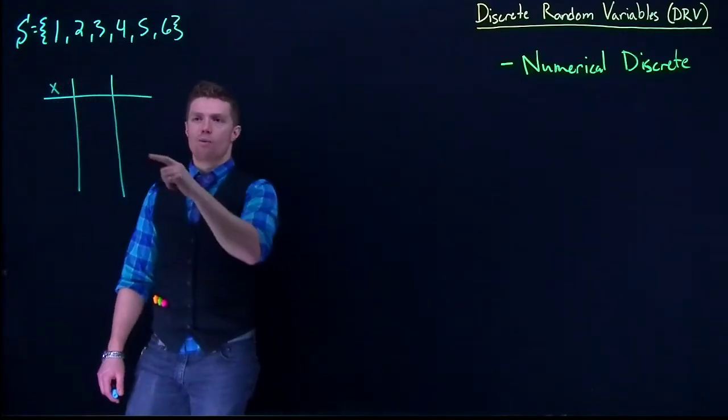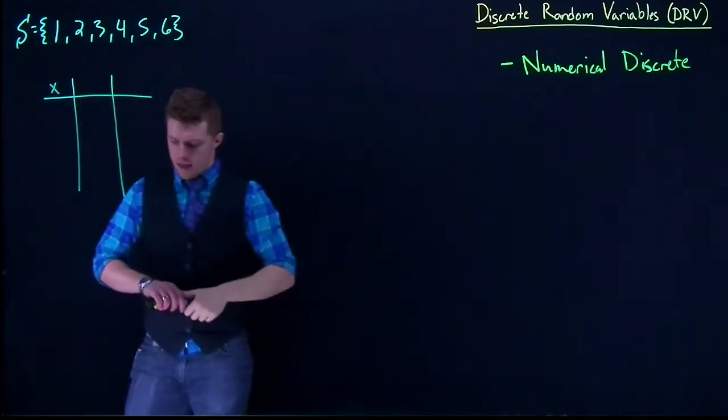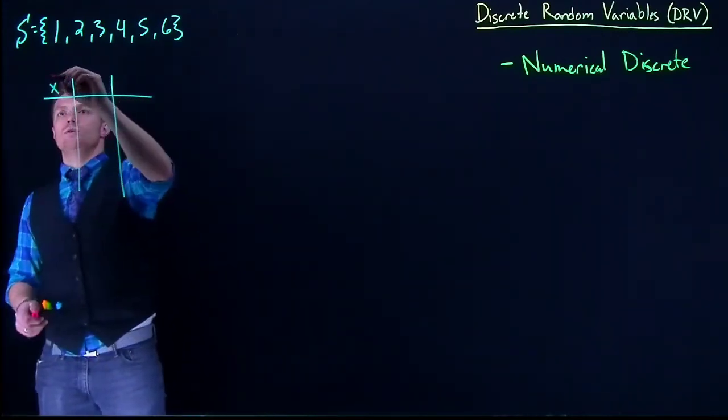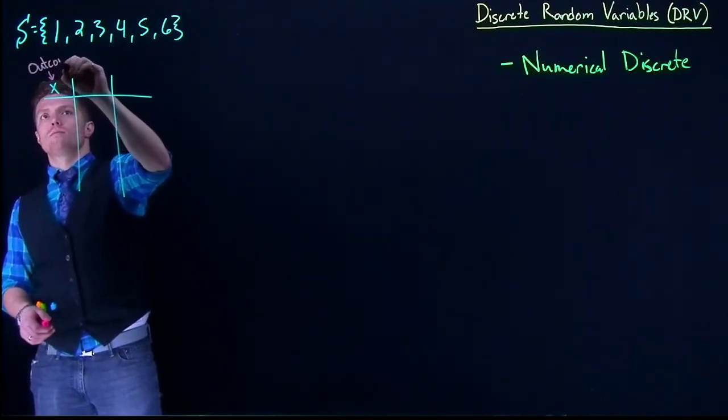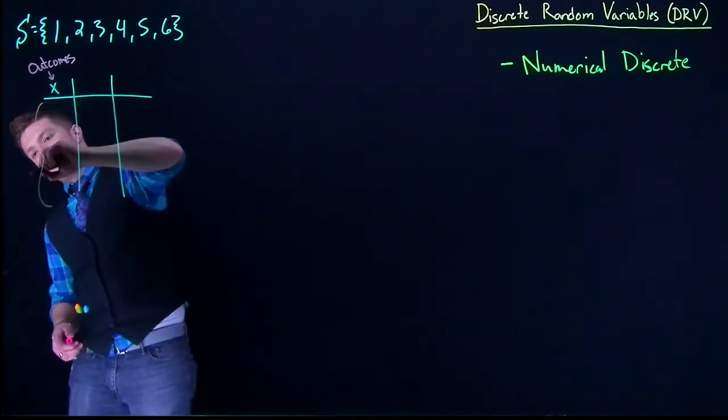The first thing we're going to do is write a little x here. In this x column, this is going to be all of our possible outcomes. It is called specifically the support. This is outcomes, and as a whole, it's called the support.